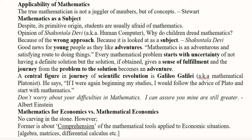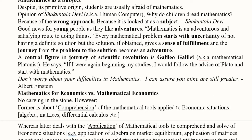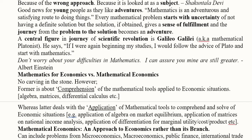Mathematics is good and easy for young people because young people like adventures, and mathematical processes are usually adventurous — in the beginning we are uncertain whether we will be able to solve the problem, but once the solution is obtained it feels like we have gone through an adventure. Galileo, known as a mathematical Platonist, said that if he had to start his studies from the beginning, he would start with mathematics — that is how much he valued it as a primary tool of learning.